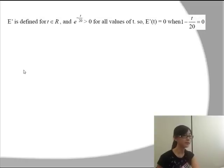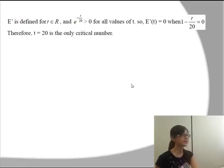In order to find the critical points, we have to make the derivative of E(t) equal to 0. When we do that, t will be equal to 20, and 20 will be the only critical number.